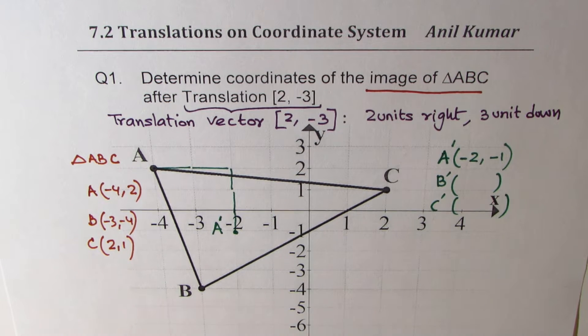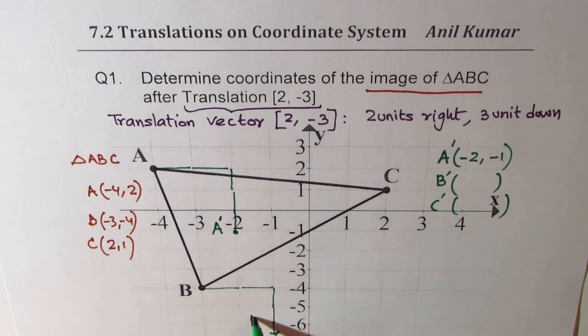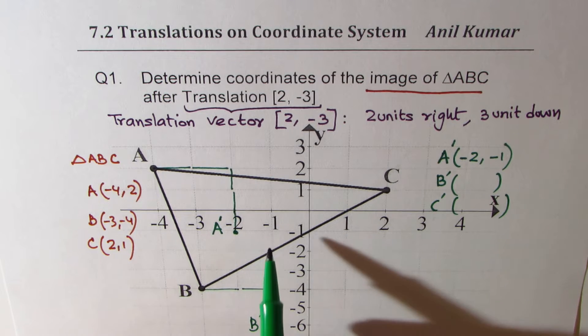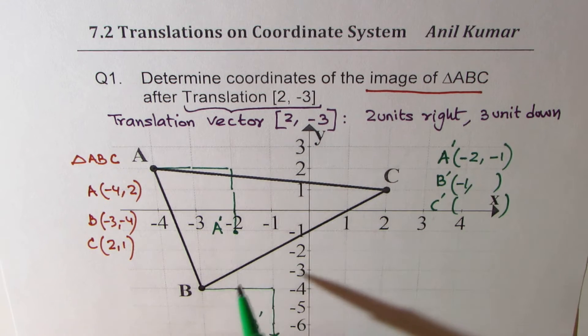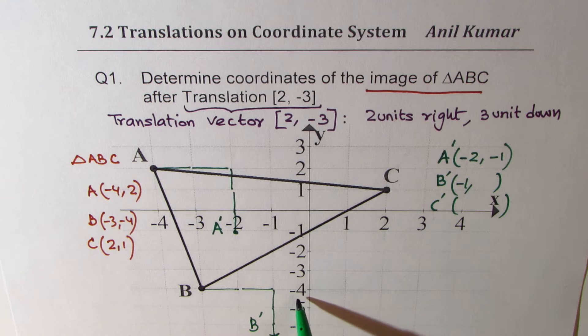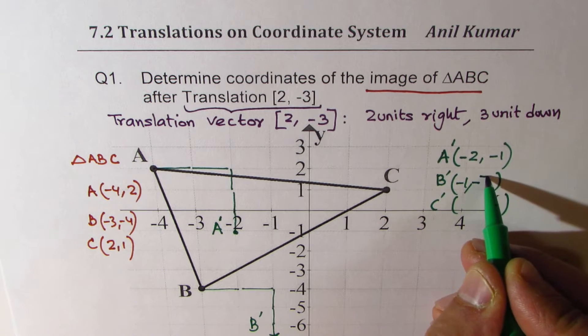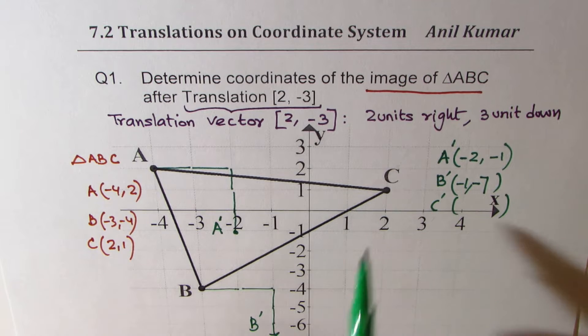So let's go to B now. B two units right means one, two and three down will bring it to minus seven. So it's kind of going out of scale here for me. So here we'll have B' and the coordinates for B' are going to be when I bring it two units right, I will be at minus one and three units down will be three down from minus four. So I'll get minus seven. So B' is (-1, -7).